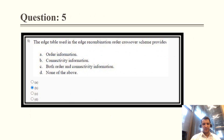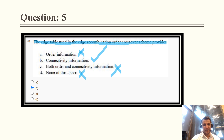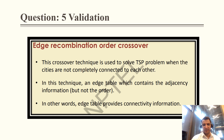Question 5: The edge table used in the edge recombination crossover scheme provides — ordered information? No. Connectivity information? Yes, that is the correct answer. Ordered is not mandatory, which is why that option is also wrong. The validation: in the crossover technique used to solve the TSP problem, the edge table contains adjacency information but not in order. The edge table provides connectivity information, and order is not important.